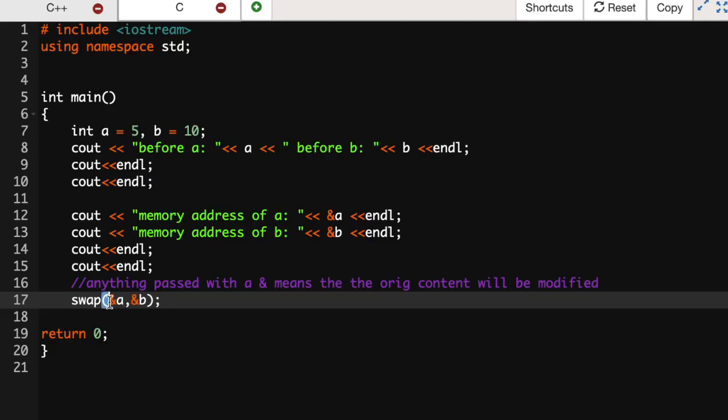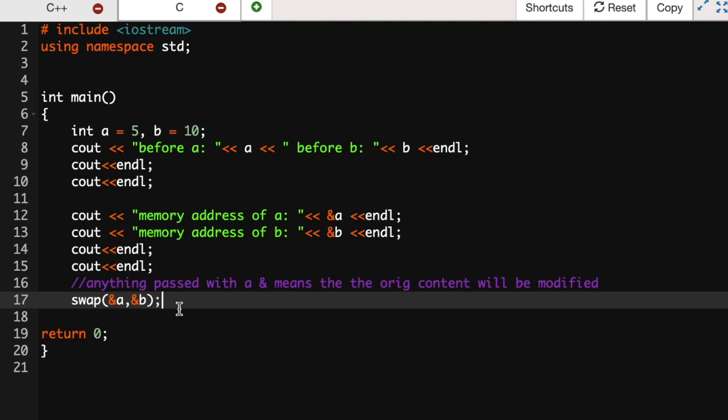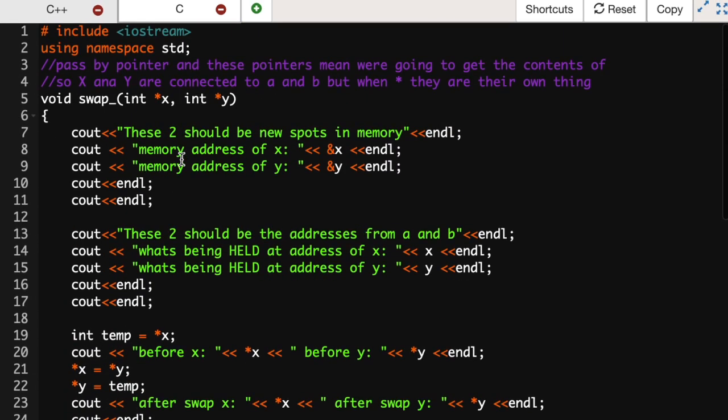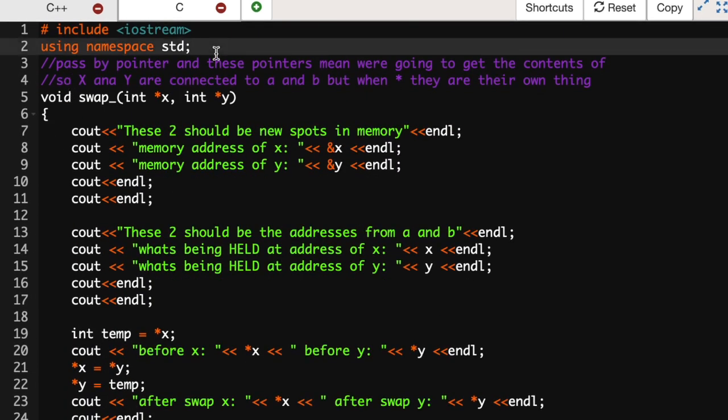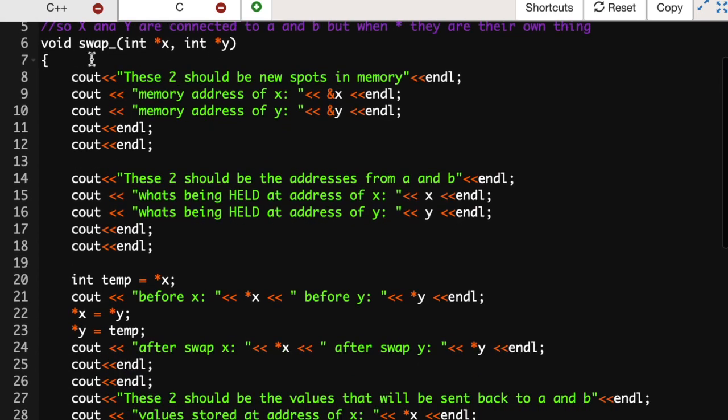Now I'm going to be making this function called swap and I'm going to be passing in the memory address of a and b. Okay so I actually already have swap written out so I'm just going to copy and paste that in and walk through it with you guys.